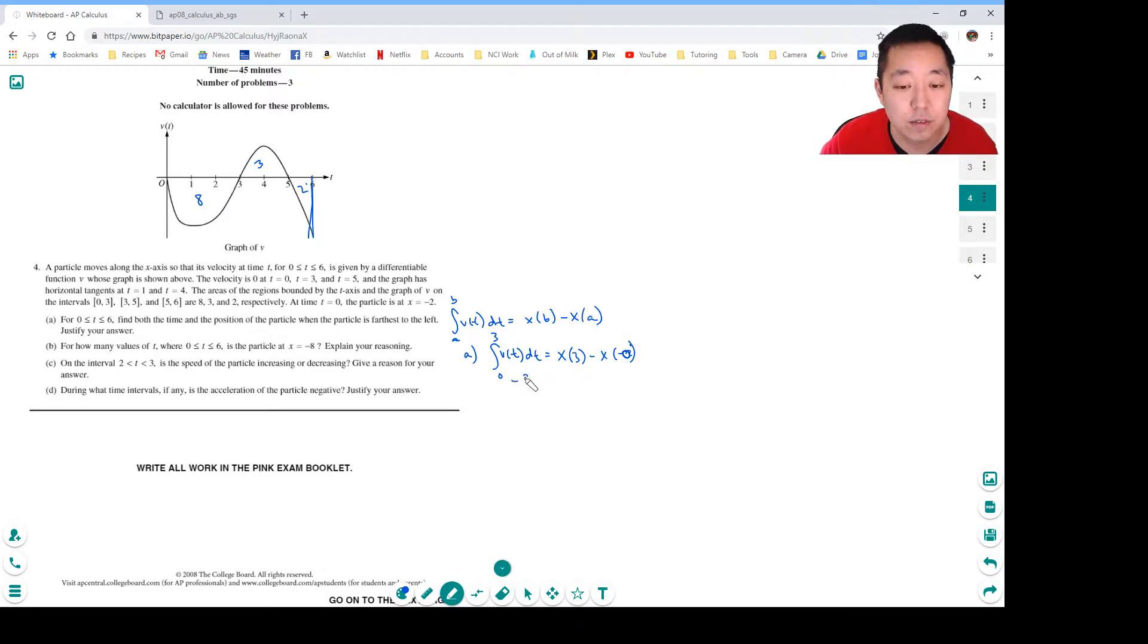This area is negative 8, x(3) is what we're trying to find, x(0) is negative 2. So minus negative 2 is plus 2, so x(3) is equal to negative 10, right? So that's at t equals 3.